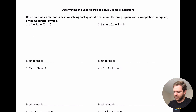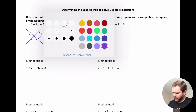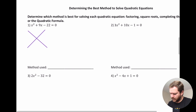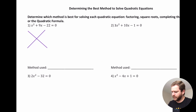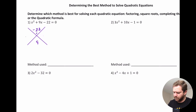Let's first look at factoring. We want to know: is this factorable? In order for a quadratic to be factorable, we take the leading coefficient — here it's 1 — and multiply it by the constant term, giving us negative 22. Then we take the middle term, which is 9. We want to know: are there two numbers that multiply to be negative 22 and add to be 9? If there are, then it's factorable.